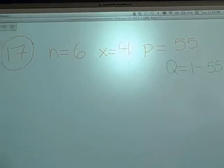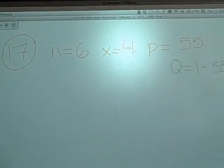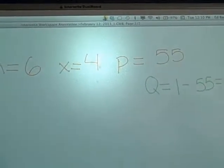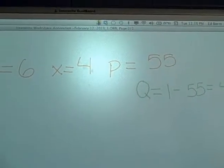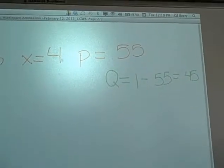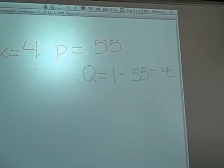We're doing number 17, where n equals 6, x equals 4, and p equals 0.55, and q equals 1 minus 0.55, which equals 0.45.